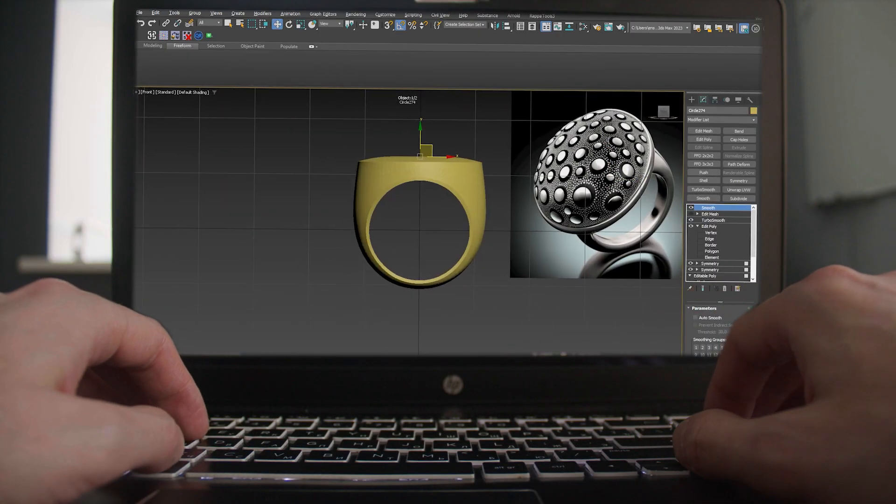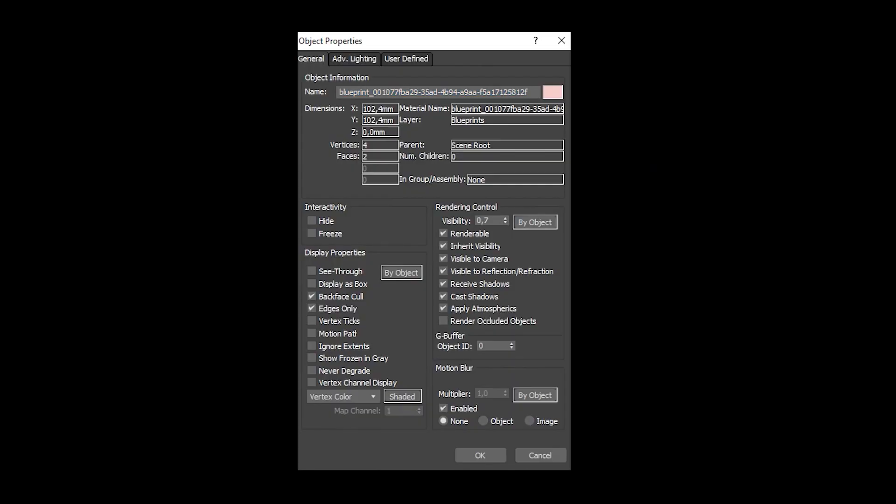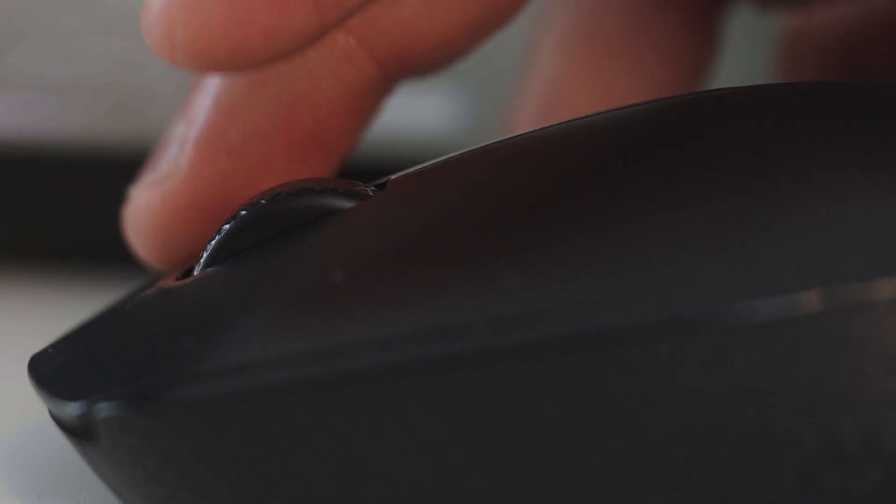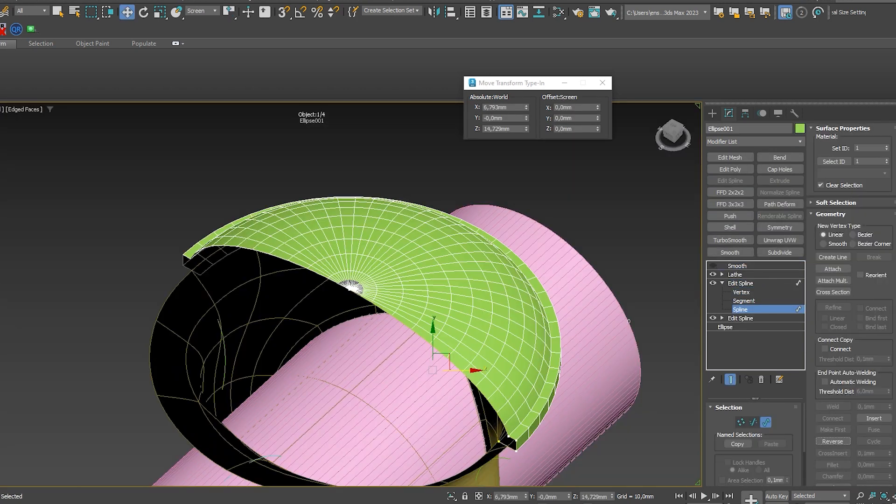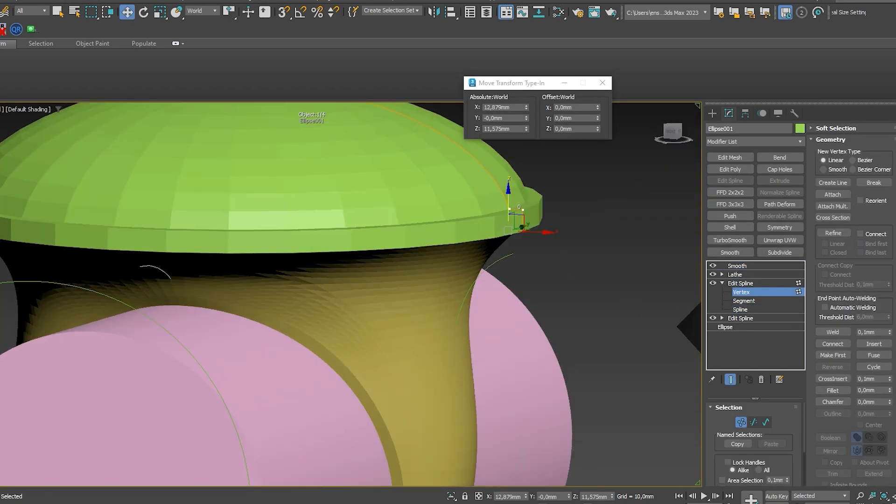Then we go to the program for 3D modeling and create the future ring. It took me four hours to create this ring. If you have any questions, write in the comments, I am happy to answer.